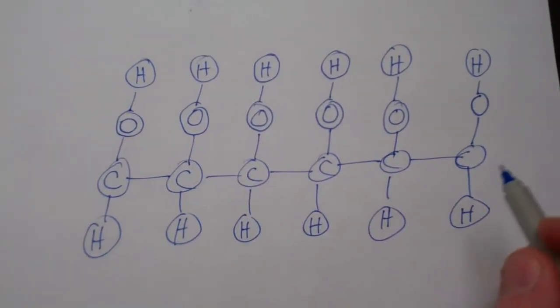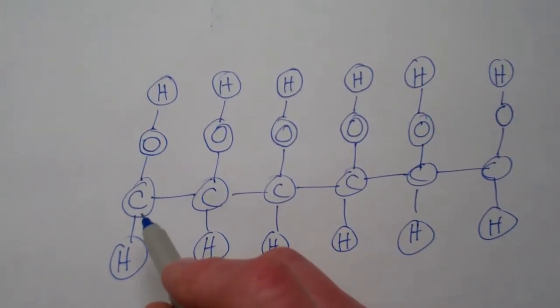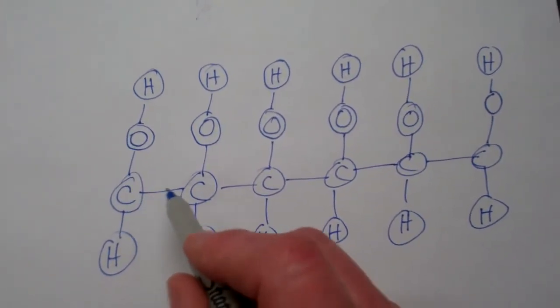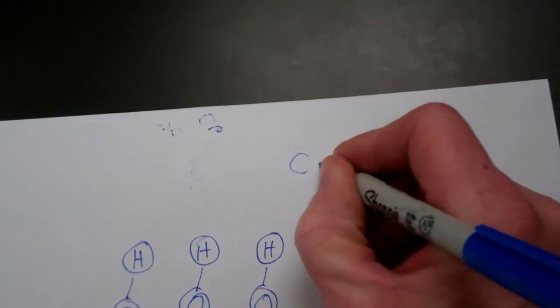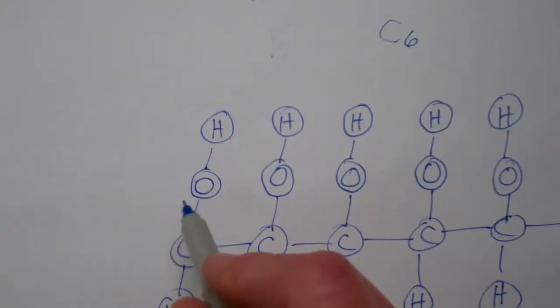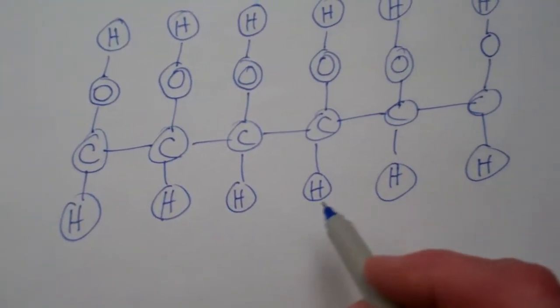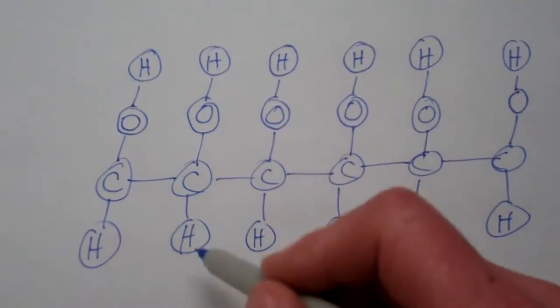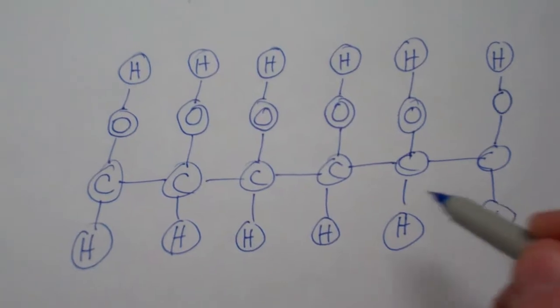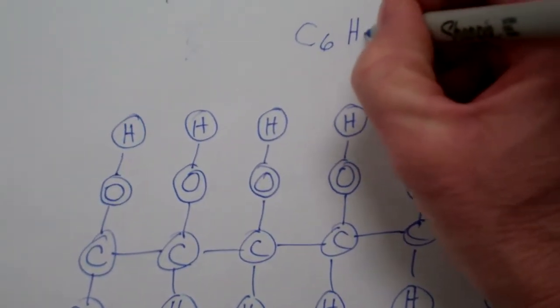what I did was I drew out what we think, well, we're actually almost positive that this is what a sugar molecule looks like. There are six carbon atoms in a chain. That's your C6. There's 1, 2, 3, 4, 5, 6, 7, 8, 9, 10, 11, 12 hydrogen atoms. Some of them are attached directly to a carbon atom through a chemical bond. Others are attached to an oxygen. So that'd be H12.